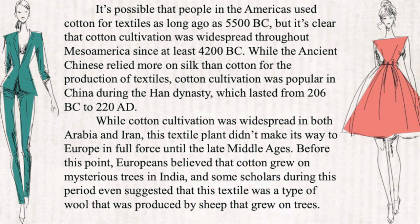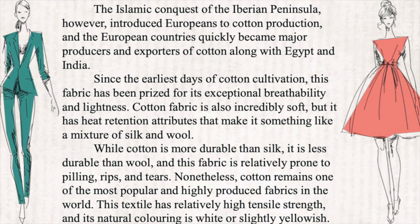While cotton cultivation was widespread in both Arabia and Iran, these textile plants didn't make their way to Europe in full force until the late Middle Ages. Before this point, Europeans believed that cotton grew on mysterious trees in India, and some scholars even suggested that this textile was a type of wool produced by sheep that grow on trees. The Islamic conquest of the Iberian Peninsula introduced Europeans to cotton production, and European countries quickly became major producers and exporters of cotton, along with Egypt and India.